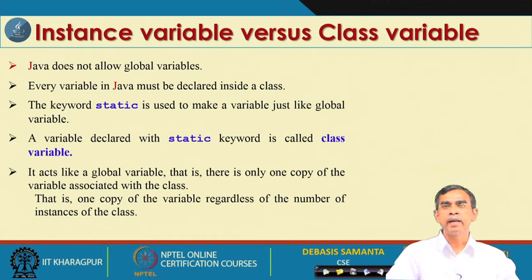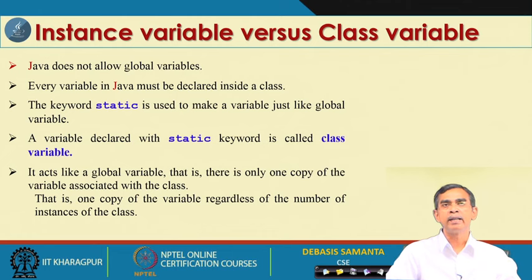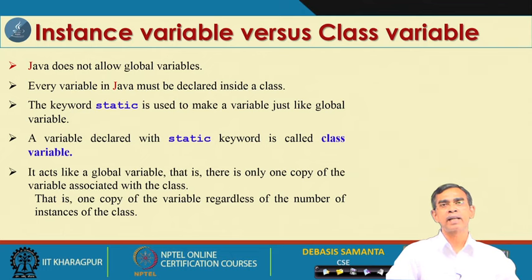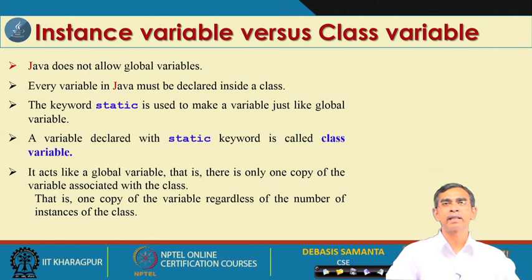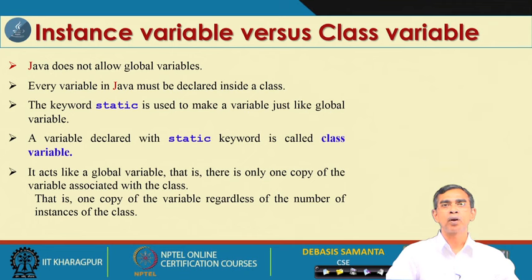If we declare a variable or a method as static, such a variable is called a class variable or such a method is called a class method. The difference between a class variable and an instance variable is that an instance variable has its own local copy, whereas a class variable has one global copy shared among all instances of the class.